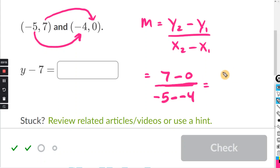7 minus 0 is 7. Two negatives in a row make it positive. And negative 5 plus 4 is negative 1. Positive divided by negative is going to be a negative. And 7 divided by negative 1 is just negative 7. So that is the slope m.